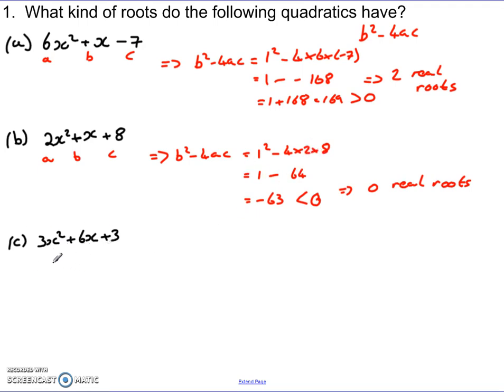Last one, 3x squared plus 6x plus 3. We can identify the a is my 3, b is my 6, and my c is also 3. And then we just plug them in. I get 6 squared take away 4 times 3 times 3. 6 squared is 36, 4 times 3 times 3 is also 36. 36 take away 36 equals 0. So in this case, I get one repeated root.